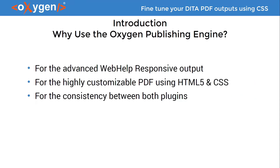Why use the Oxygen Publishing Engine? First, for the advanced Web Help Responsive output, which allows users to add comments. Second, for the highly customizable PDF using HTML5 and CSS, which is the transformation we'll use in this presentation to convert DITA documents to PDF. Both outputs use HTML5 as a common part of their transformation, meaning CSS customizations can be reused across both outputs.